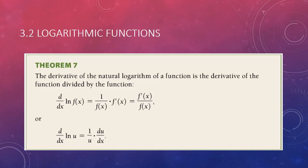Okay, theorem 7 tells us how to deal with situations where you're not just taking the natural log of x. What if there's a function there? Well, you use the chain rule. It's 1 over whatever you're taking the natural log of times the derivative of that. Let's see how that works.